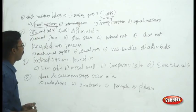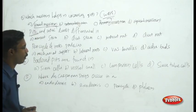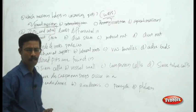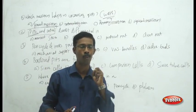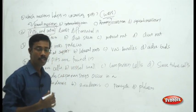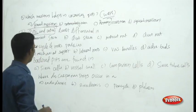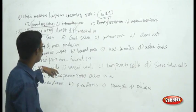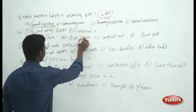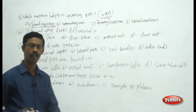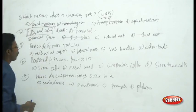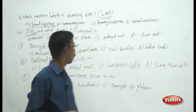The next question: in which system do the pith and cortex not differentiate? These two regions are in the centre of the plant system. The choices are monocot, dicot, root, and stem. You can eliminate dicots because in dicots you can see differentiated structures. Choosing between stem and root, the answer is the monocot stem, which will not have differentiated pith and cortex.